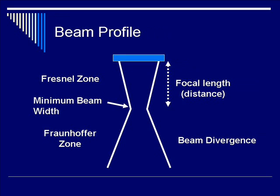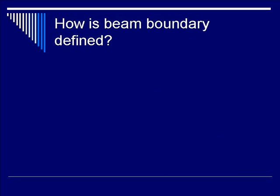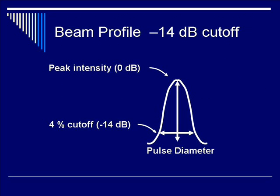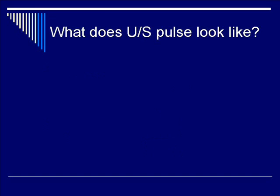The waist of the beam is where beam width is minimum. From that point on, the beam diverges because of a loss of focus. For a single piezoelectric element transducer, a focal zone is defined whereby the width of the beam during this length is less than or equal to two times the minimum beam width. This also can be used to describe a system with a transducer array or one with a fixed lens. Beam boundary is defined using the 10 dB times log of the intensity equation. When the intensity is minus 14 dB, the boundary's intensity is 4%, and that's where we define the boundary. To clarify, a minus 14 dB cutoff implies that for a beam peak intensity of 0 dB, the boundary is where it is minus 14 dB or 4%.